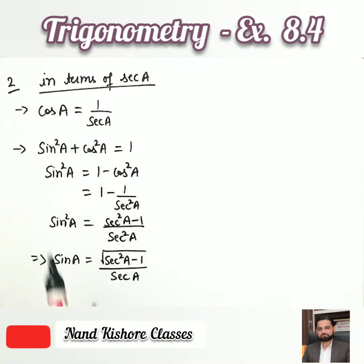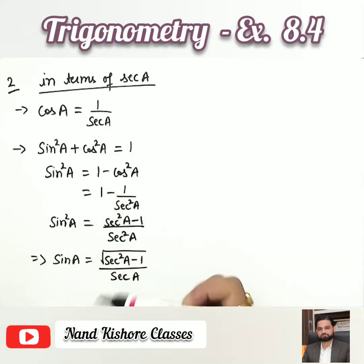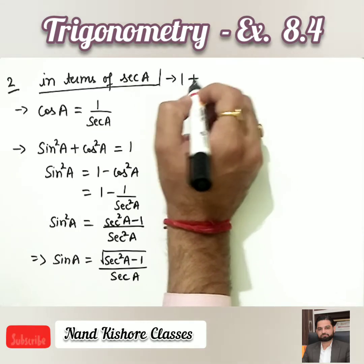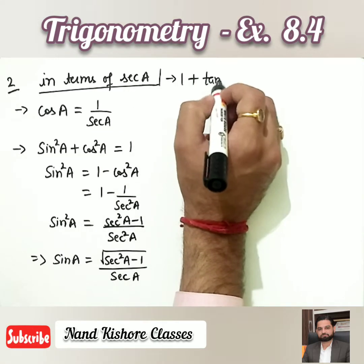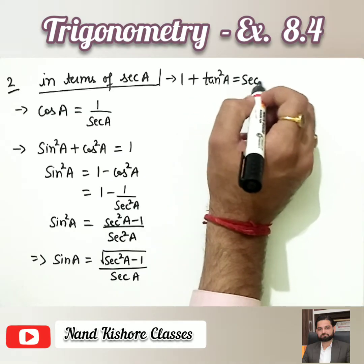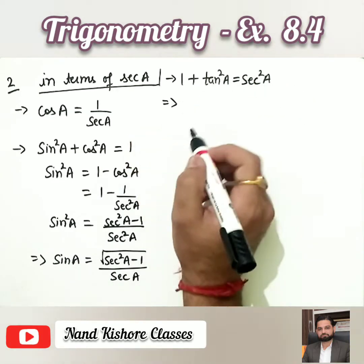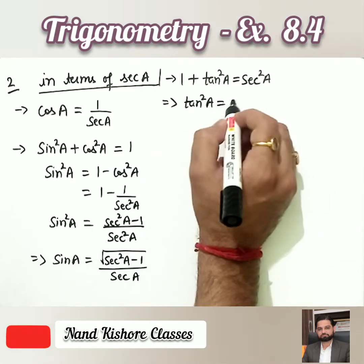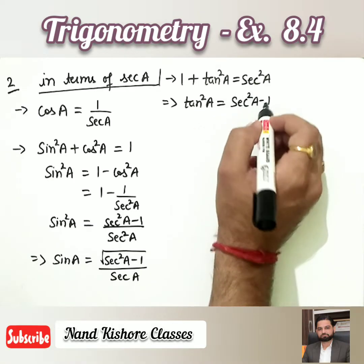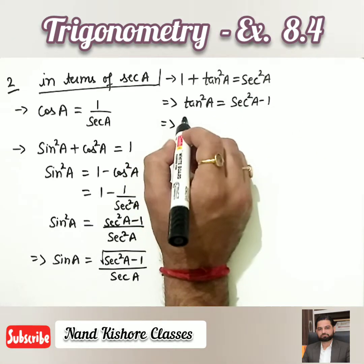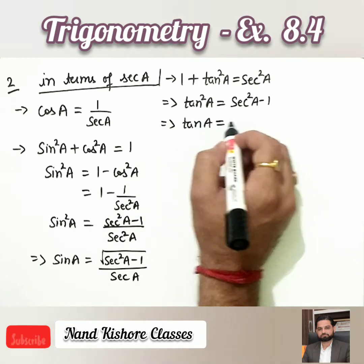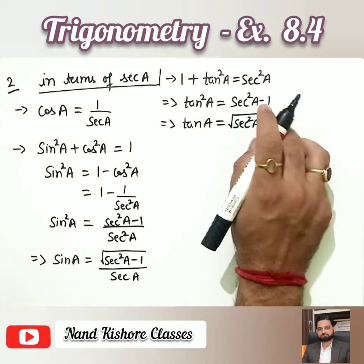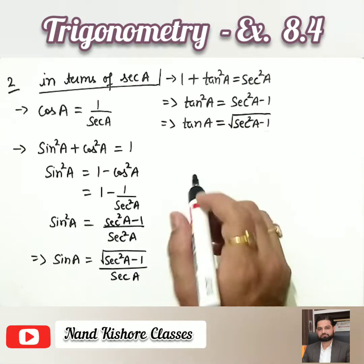So far we have expressed cos A and sin A in terms of sec A. Now using the formula 1 + tan²A = sec²A, we get tan²A = sec²A − 1. Taking the square root on both sides: tan A = √(sec²A − 1).